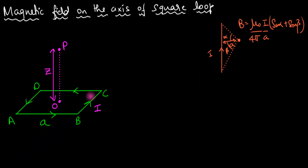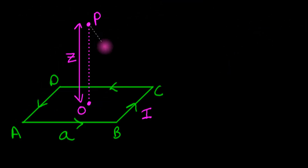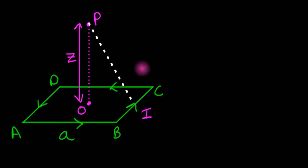Let's start with side BC, since that's easy to work with. I'll drop a perpendicular from point P onto BC. That perpendicular distance is what I'll call R — since 'a' is already used for the side length. So the perpendicular from P down to BC has length R.